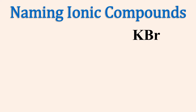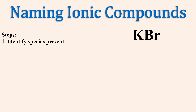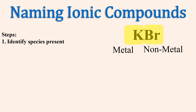Let's name the compound with the chemical formula KBr. First, let's identify the species involved. K is the elemental symbol for potassium, which is a metal. Br is the elemental symbol for bromine, which is a non-metal.